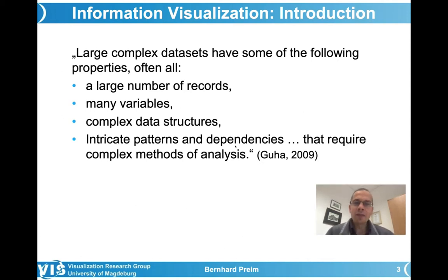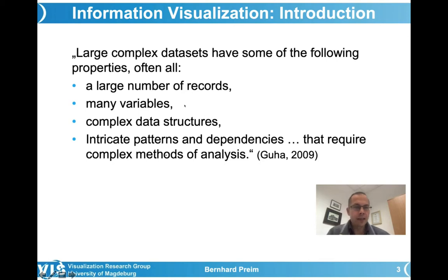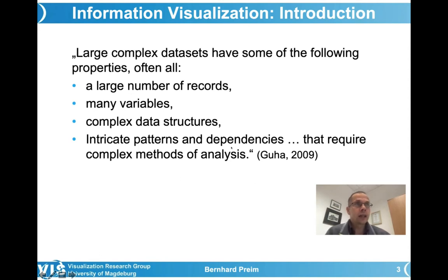Let me start with a citation from Guha. Large and complex data sets have some of the following properties, often all: a large number of records, many variables, complex data structures, and intricate patterns and dependencies that require complex methods of analysis. A large number of records and many variables adds up to a large table where columns and rows represent variables and records. But the data structures could be more complex — individual elements within the table could be high-dimensional themselves. Patterns and dependencies are relevant for plausibility checks, for determining outliers, and for the ways the data is analyzed.